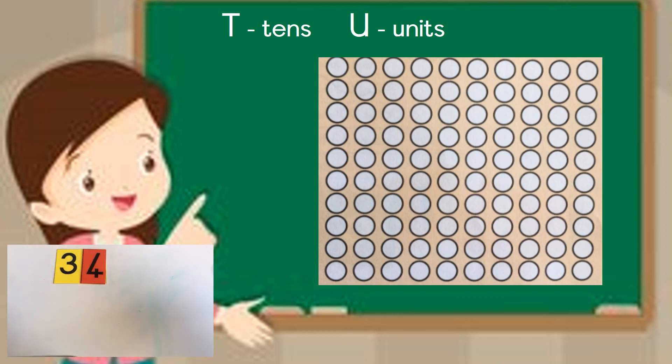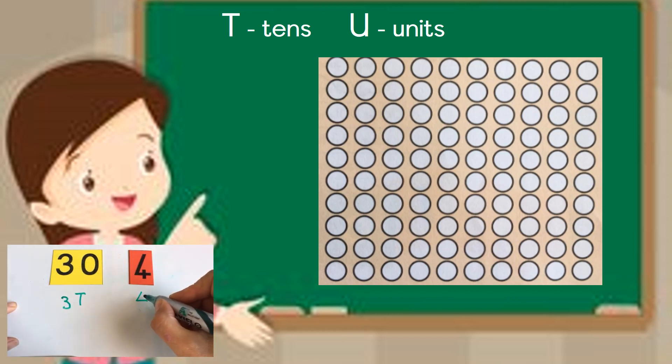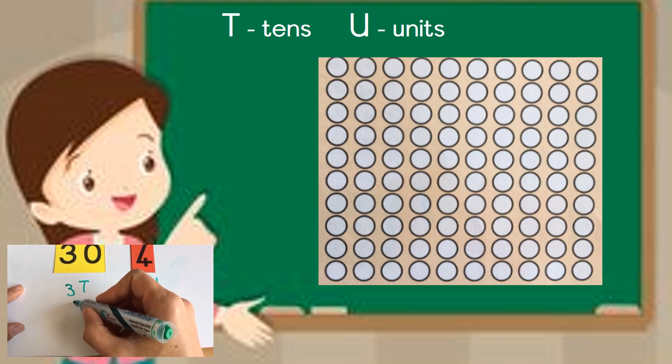If I give you the number 34, it means it's a 30 and a 4 if I rename it. So that tells me I've got 3 tens and I've got 4 units. So if I have to colour it in on the dots now, I'm going to colour in.